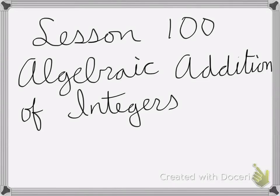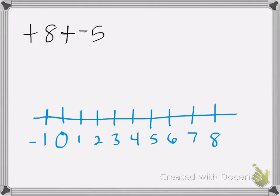Lesson 100 is on algebraic addition of integers. So here we have a positive 8 plus a negative 5. If I was to do this on a number line, I would think: first I'm going to start at 0 and go to positive 8 — go to the right to positive 8 — because a positive sign means we go to the right of the line.